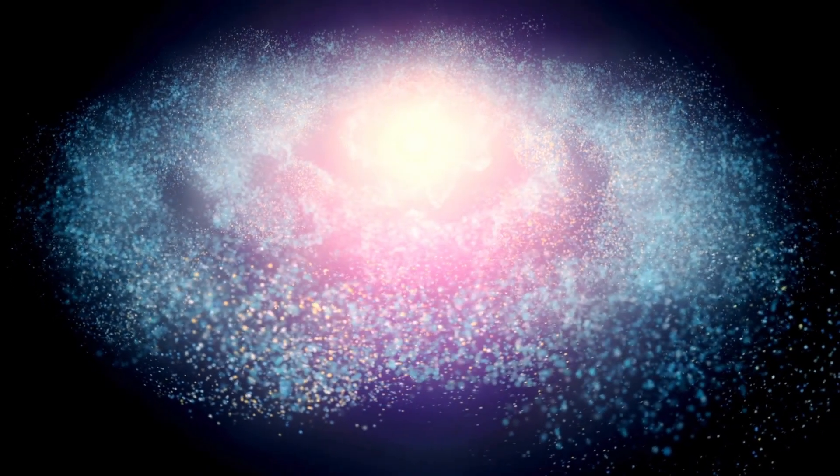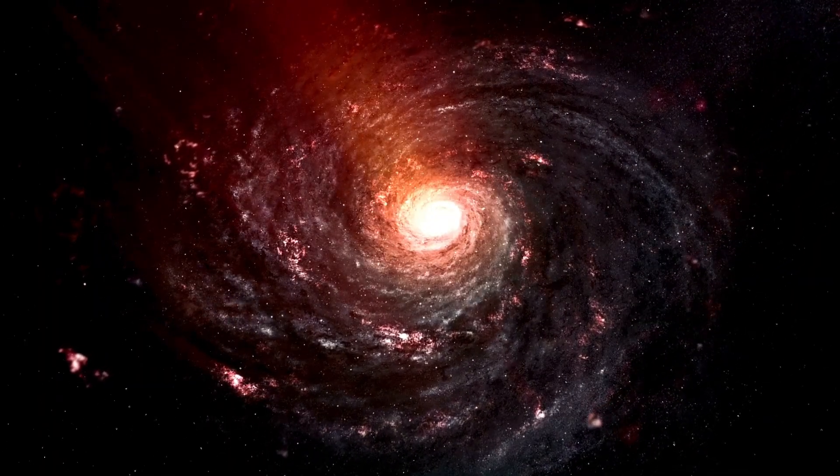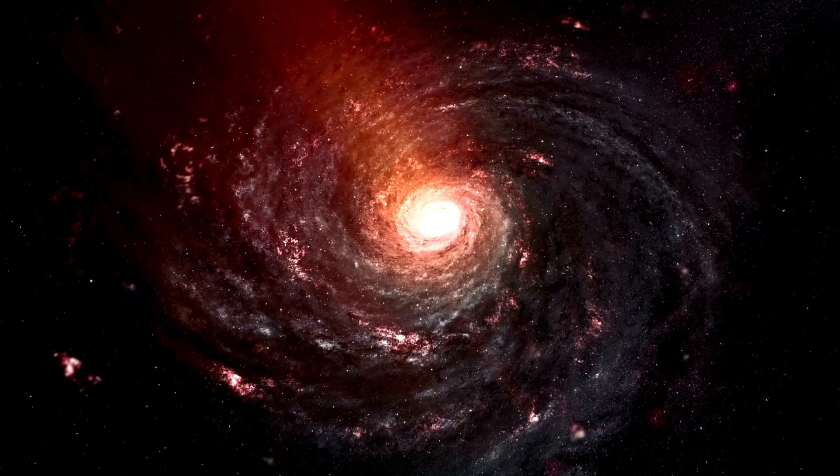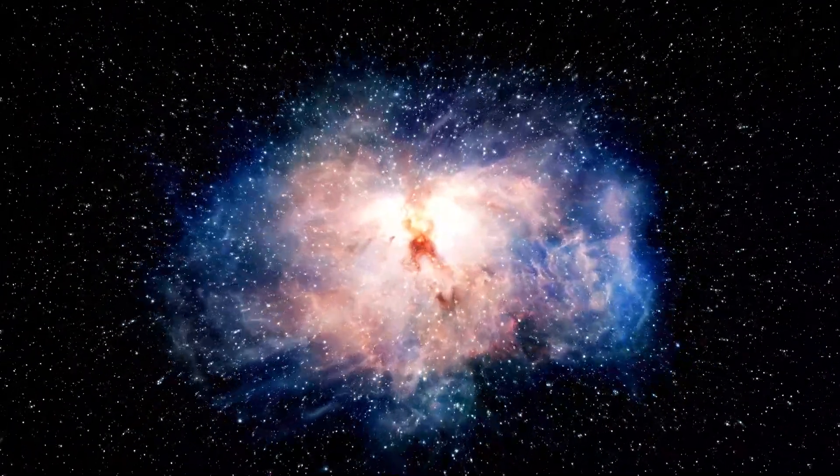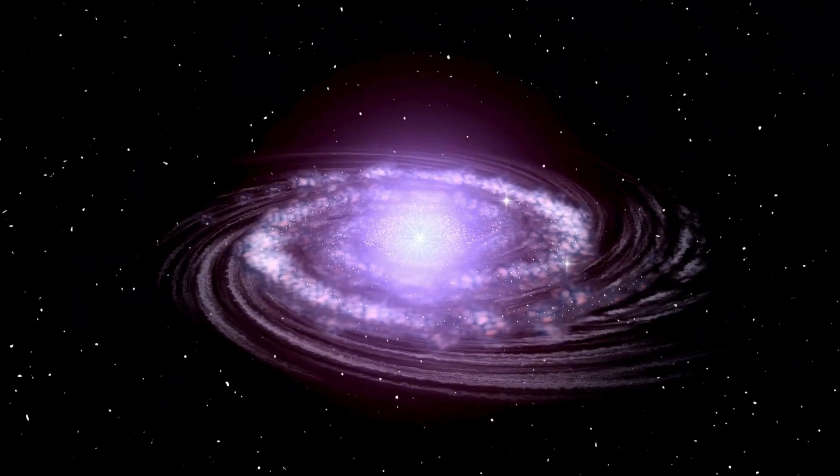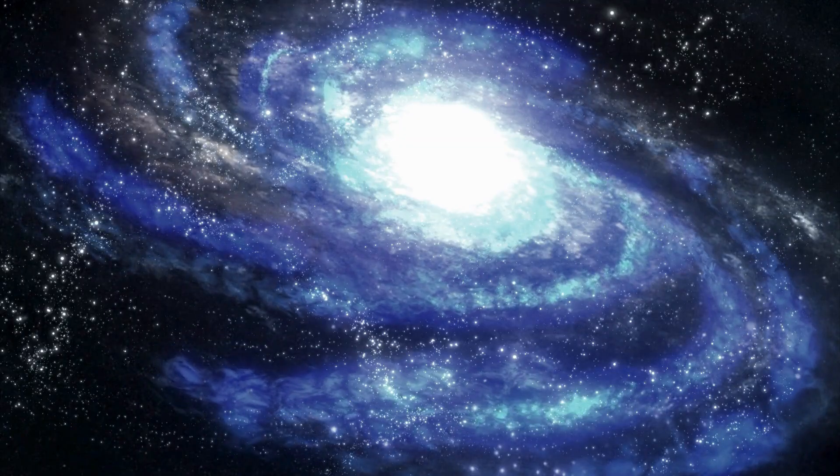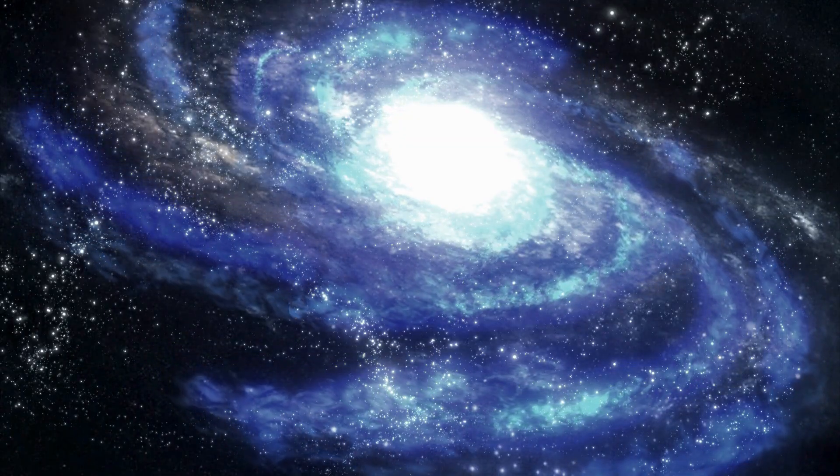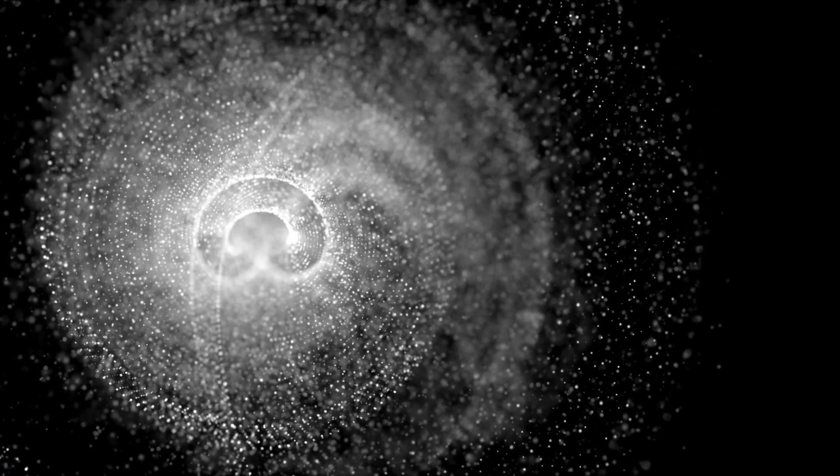Enter the mystery of dark matter halos. Picture galaxies wearing these invisible cloaks made of dark matter. How do we know they're wearing them? When light travels past these cloaked galaxies, the dark matter bends the light's path, making things look wonky. Scientists call this gravitational lensing. It's like putting on glasses. Suddenly, everything seems to shift.